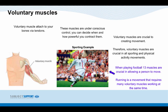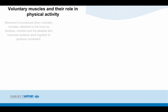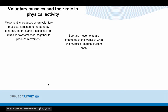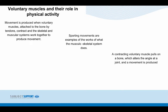Here's a sporting example. When playing football, muscles are crucial in allowing a person to move. Running is a movement that requires many voluntary muscles working at the same time. Movement is produced when voluntary muscles attach to the bone by tendons, contract, and the skeletal and muscular systems work together. A contracting voluntary muscle pulls a bone, which alters the angle at the joints and a movement is produced.